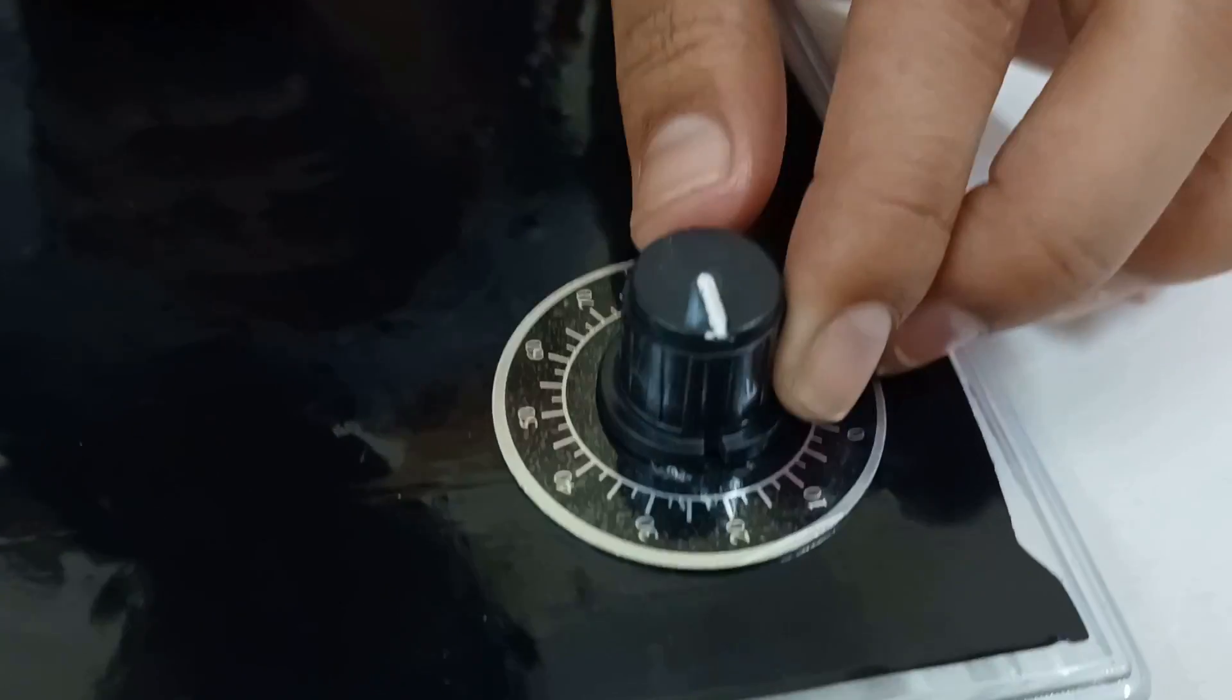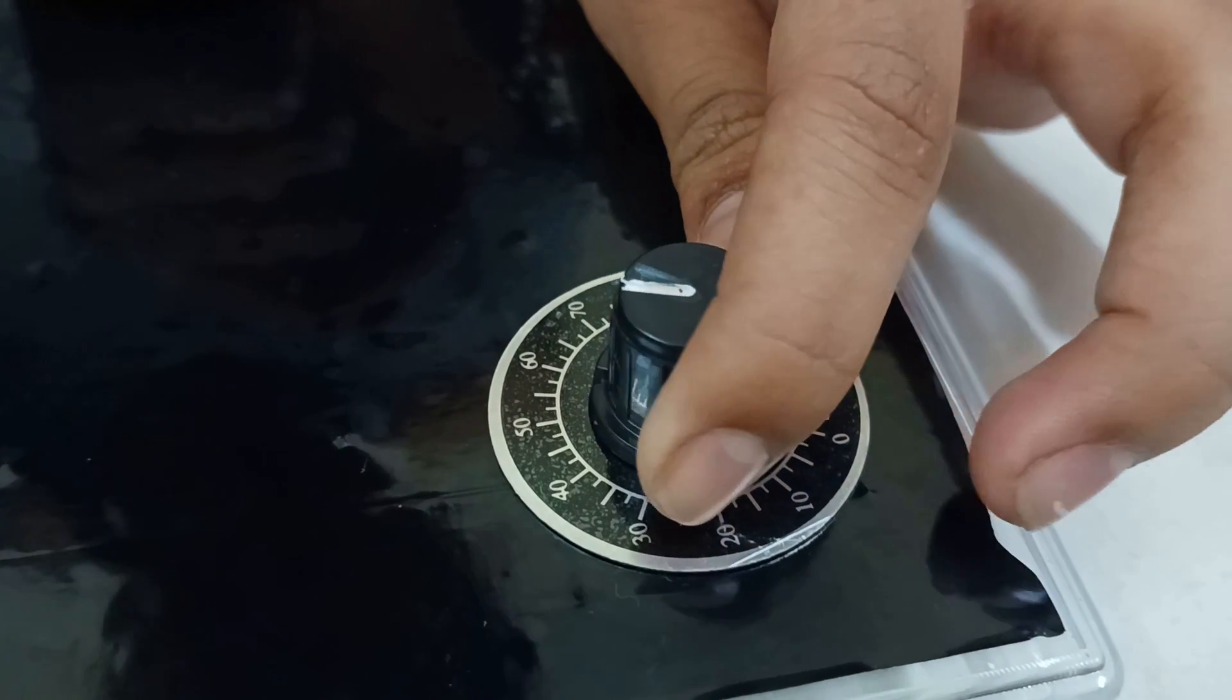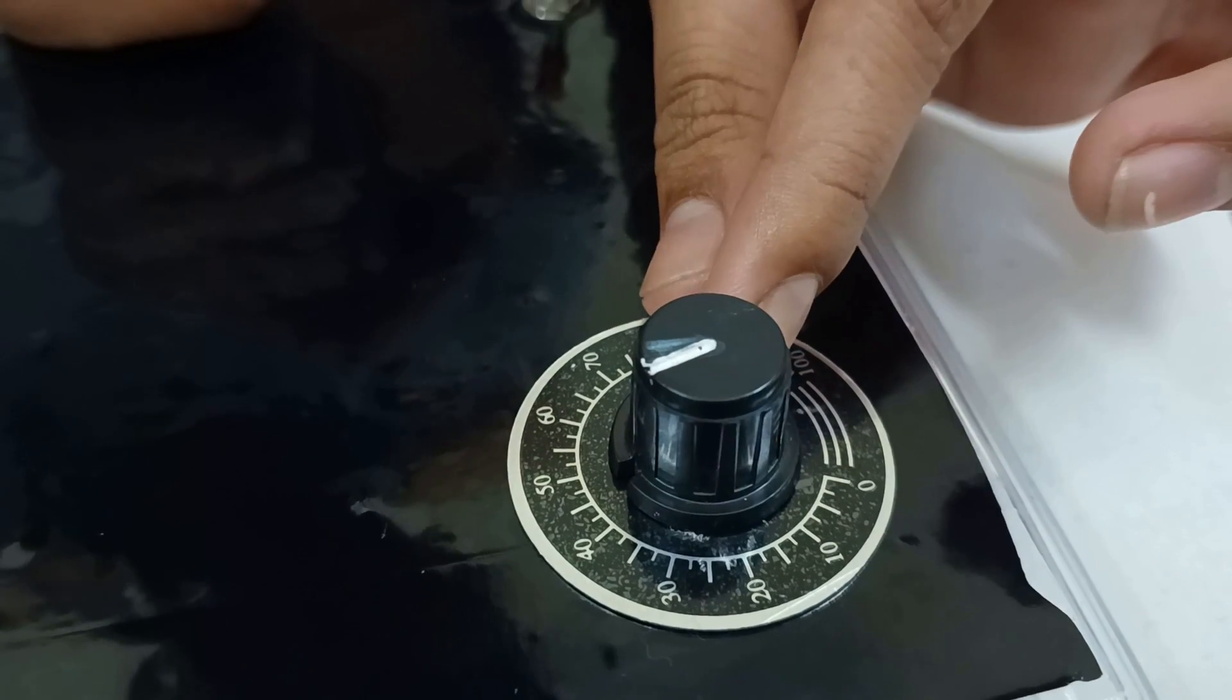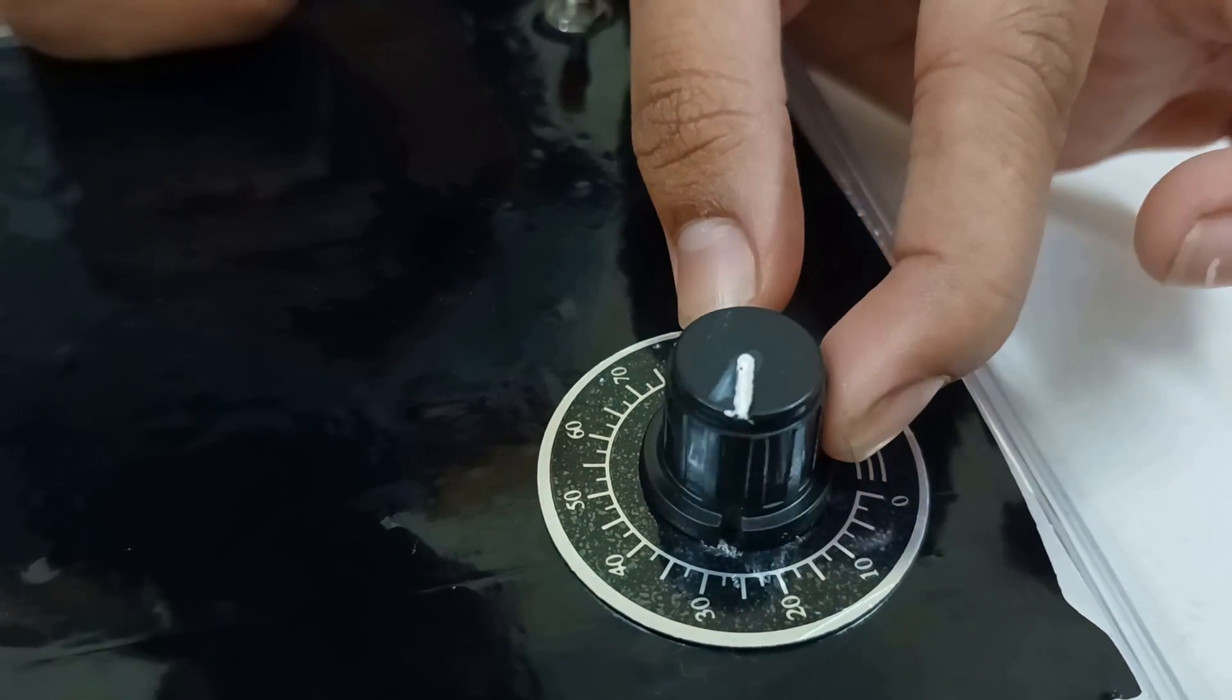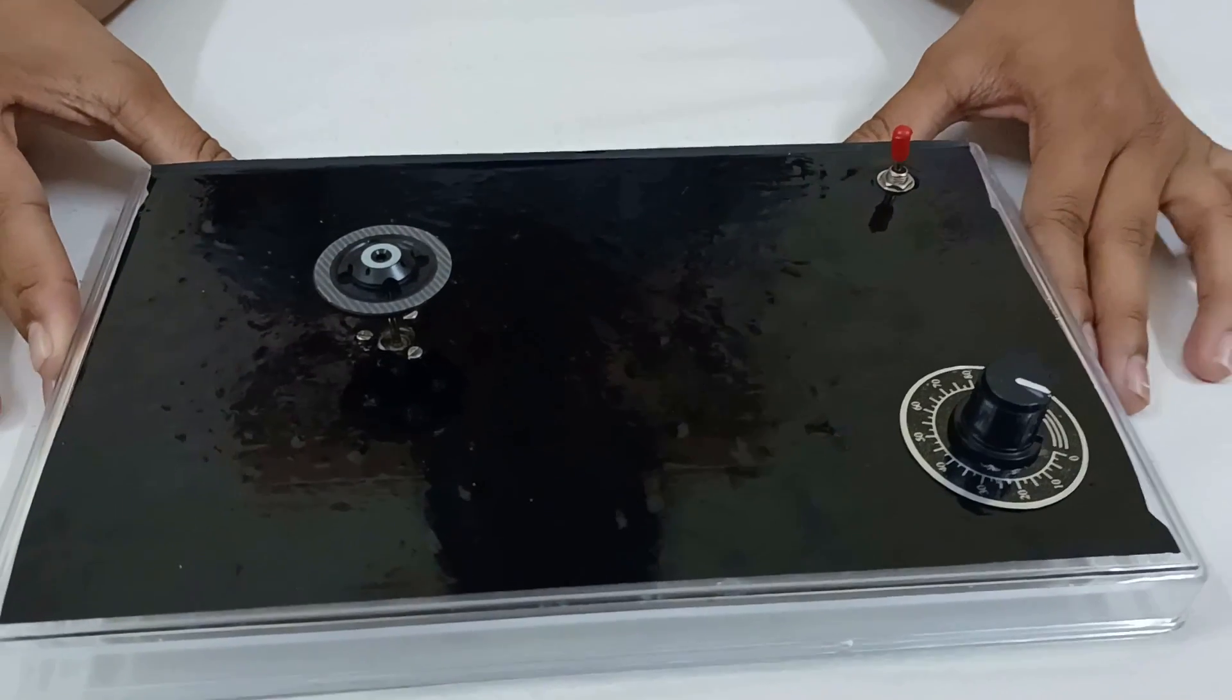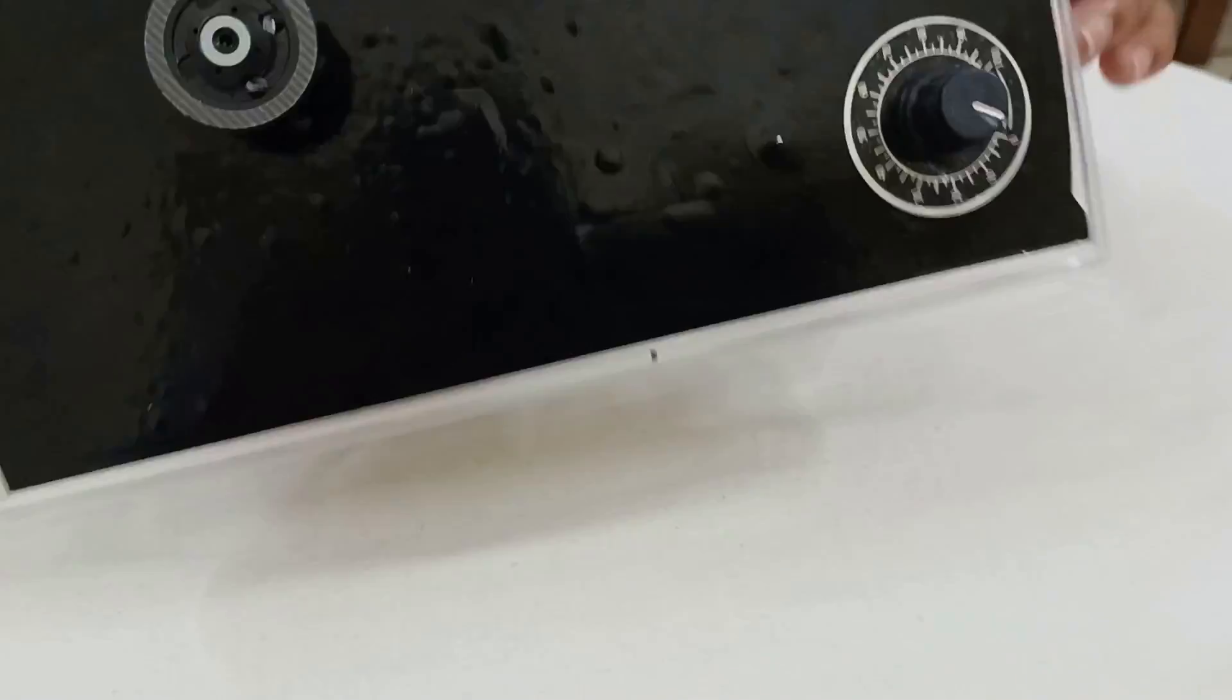Please ensure that the marking of the knob should point towards 0. If we turn the knob to right side, the speed of motor will increase. And if we turn the knob to left, the speed of motor will decrease. Now we will connect all the parts. For that some wires are required.